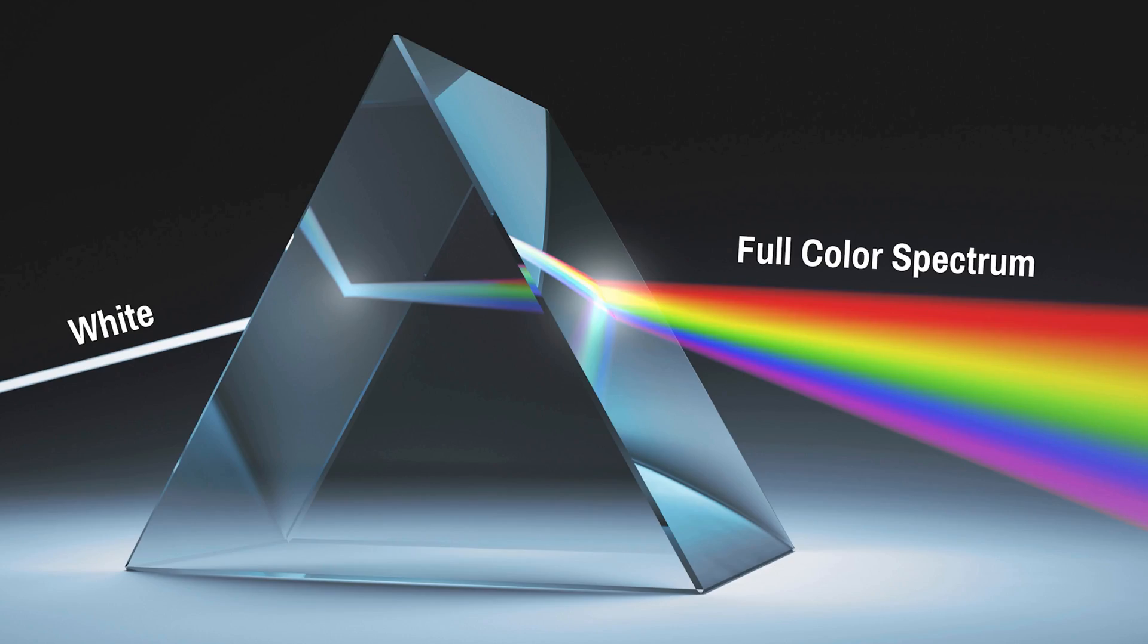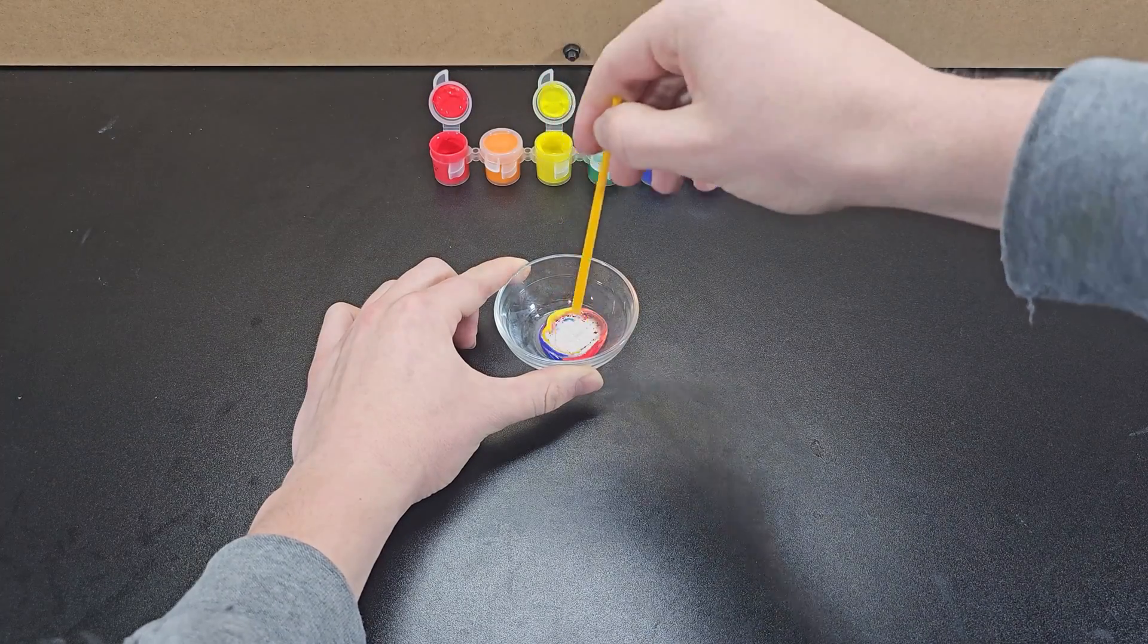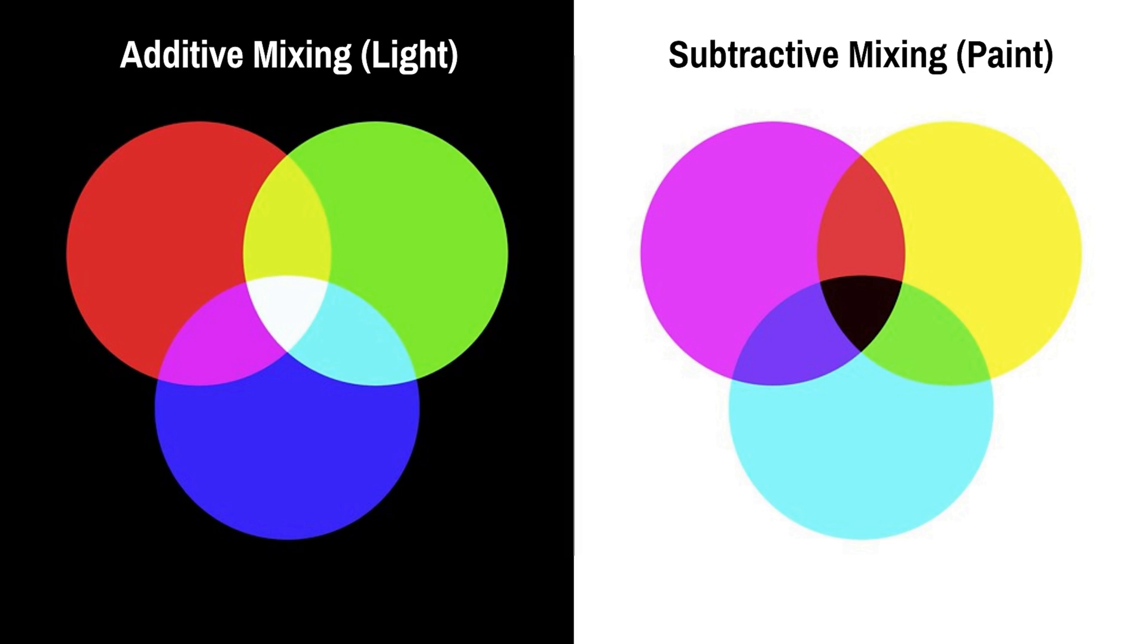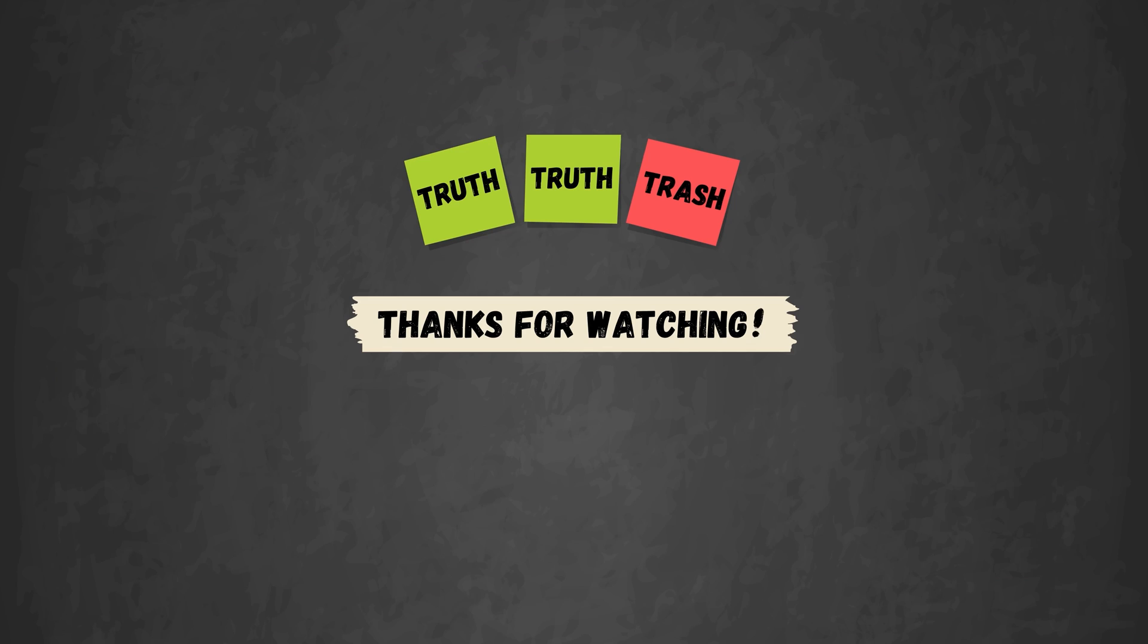Although white light is a combination of all wavelengths of light, adding all primary paint colors together does not create white paint. This highlights a critical difference between additive mixing like in the case of light and subtractive mixing like in the case of paint. Here's a quick recap of the final round. Thanks for watching to the end and I'll see you next time.